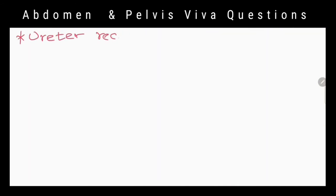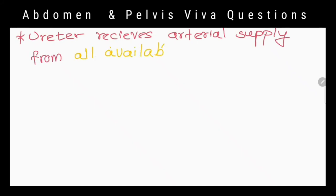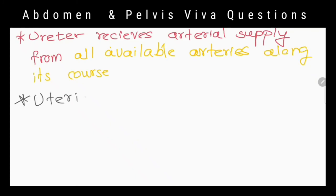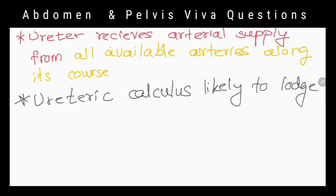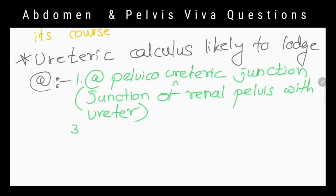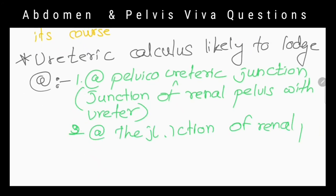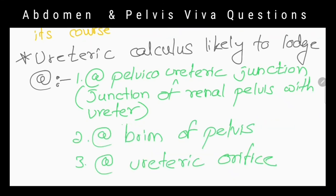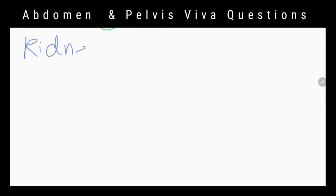Tell me the arterial supply of the ureter in one sentence. It receives arterial supply from all available arteries along its course. Tell me three sites where a ureteric calculus is likely to lodge: at the junction of the renal pelvis with the ureter, at the pelvic brim, and at the ureteric orifice.